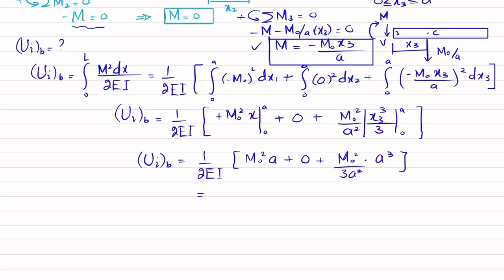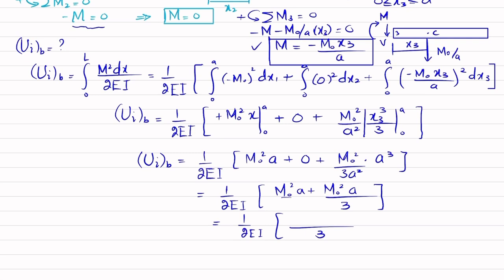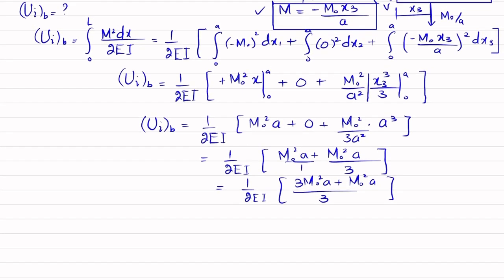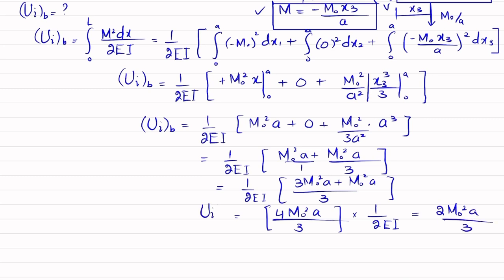Simplifying: Ui = (1/2EI) times (M0² A + M0² A / 3). Taking the LCM of 3: that gives (3 M0² A + M0² A) / 3 = 4 M0² A / 3. So Ui = (1/2EI) times (4 M0² A / 3) = 2 M0² A / (3EI). This is the total strain energy due to bending.